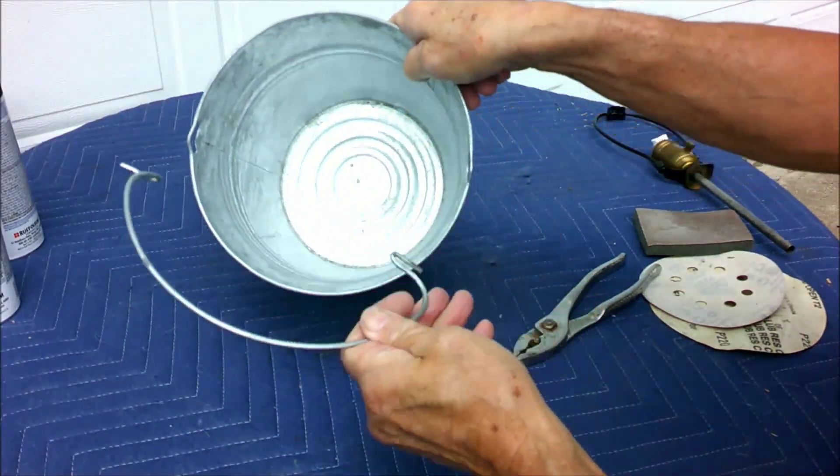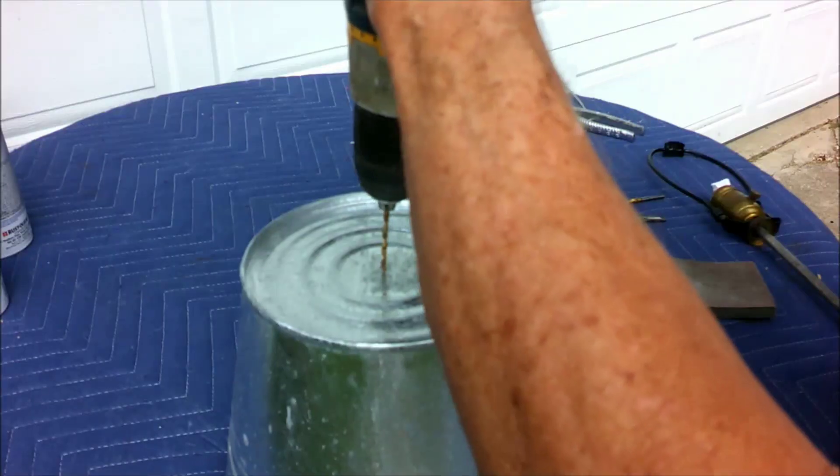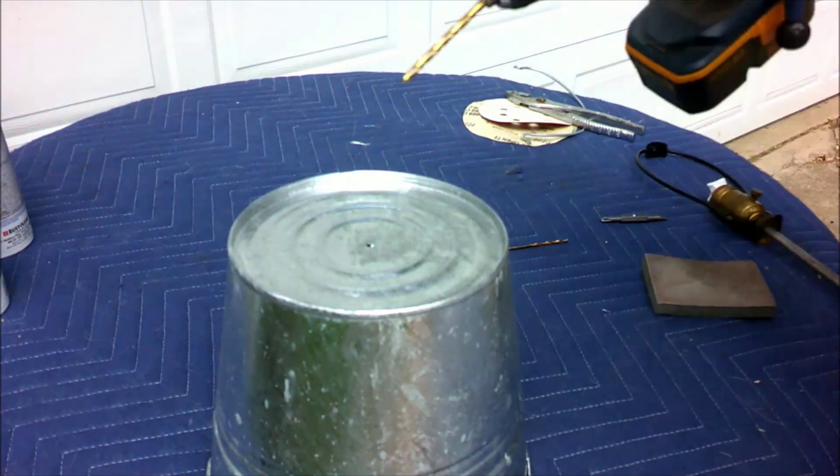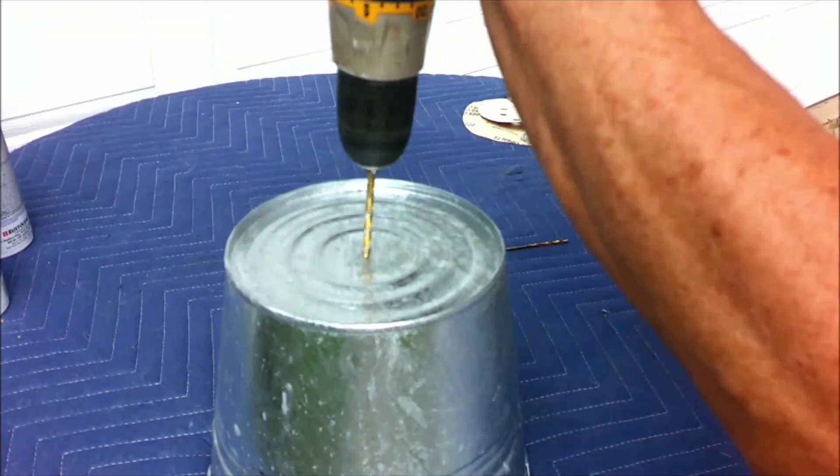Next we're going to drill the bottom of the bucket with a pilot hole and follow up with a larger bit. This is where the harp will mount to the bucket.